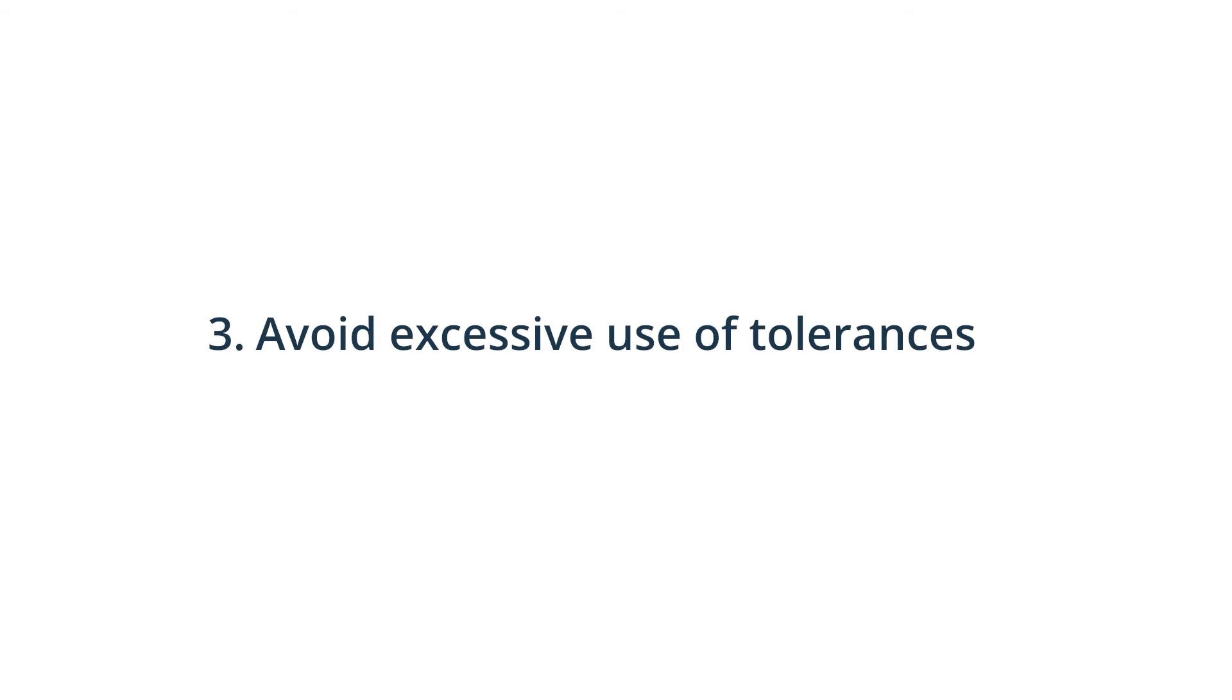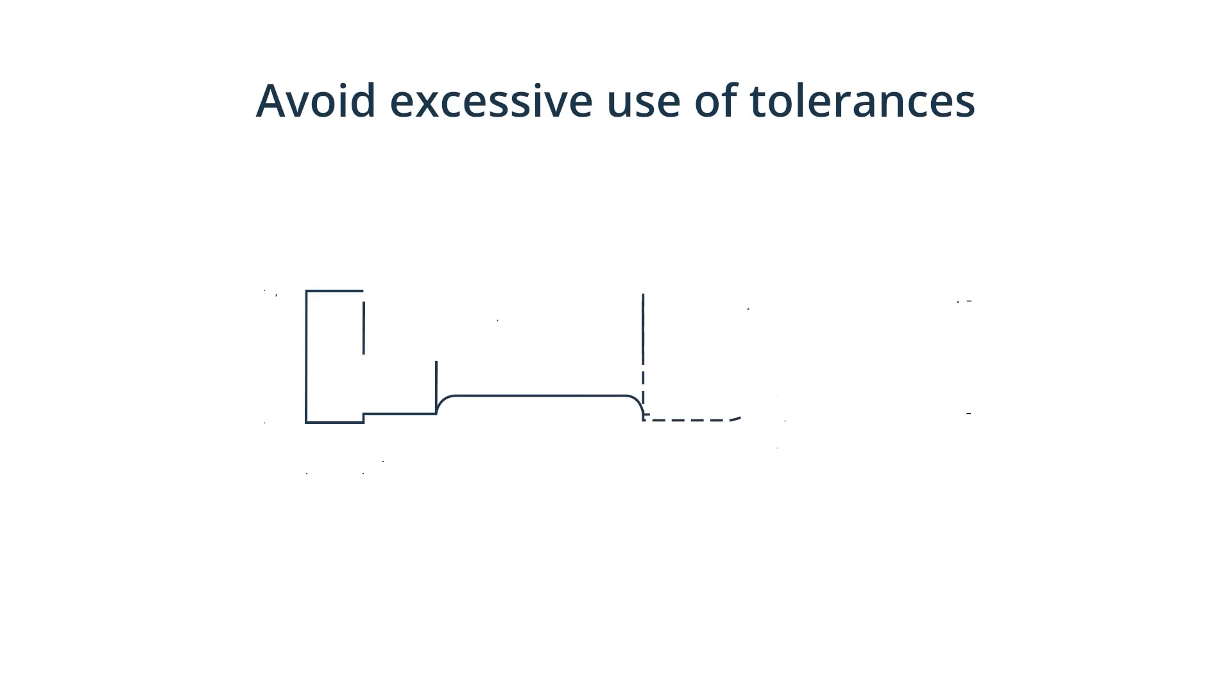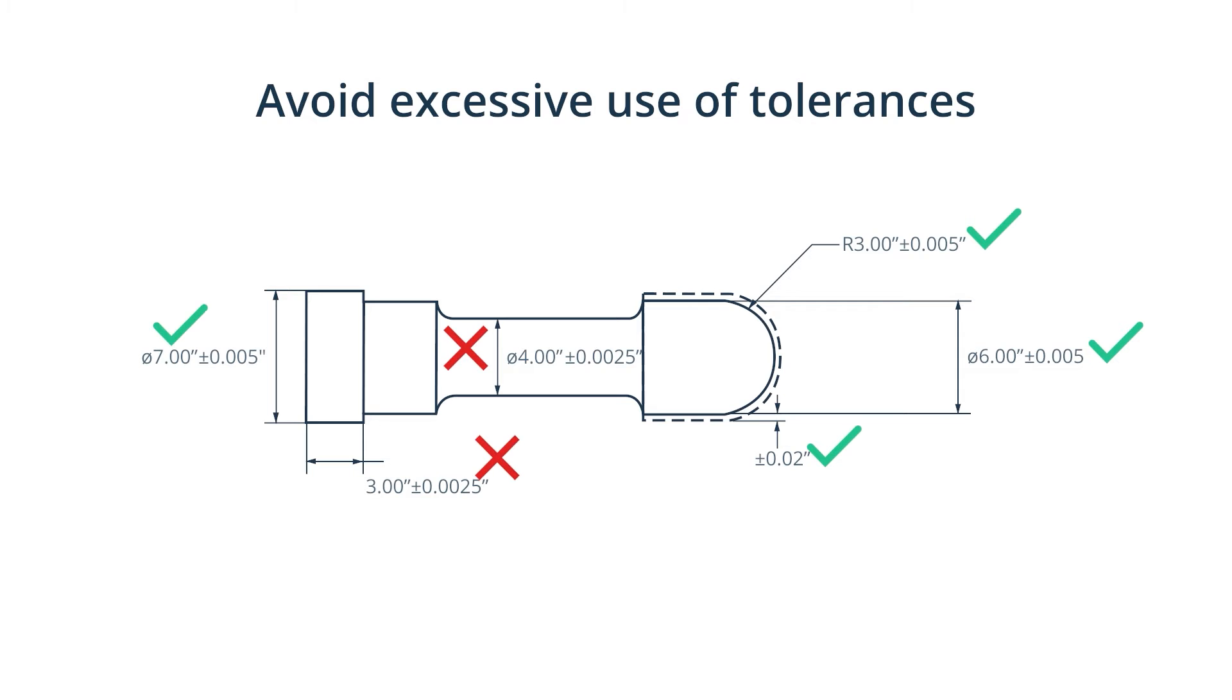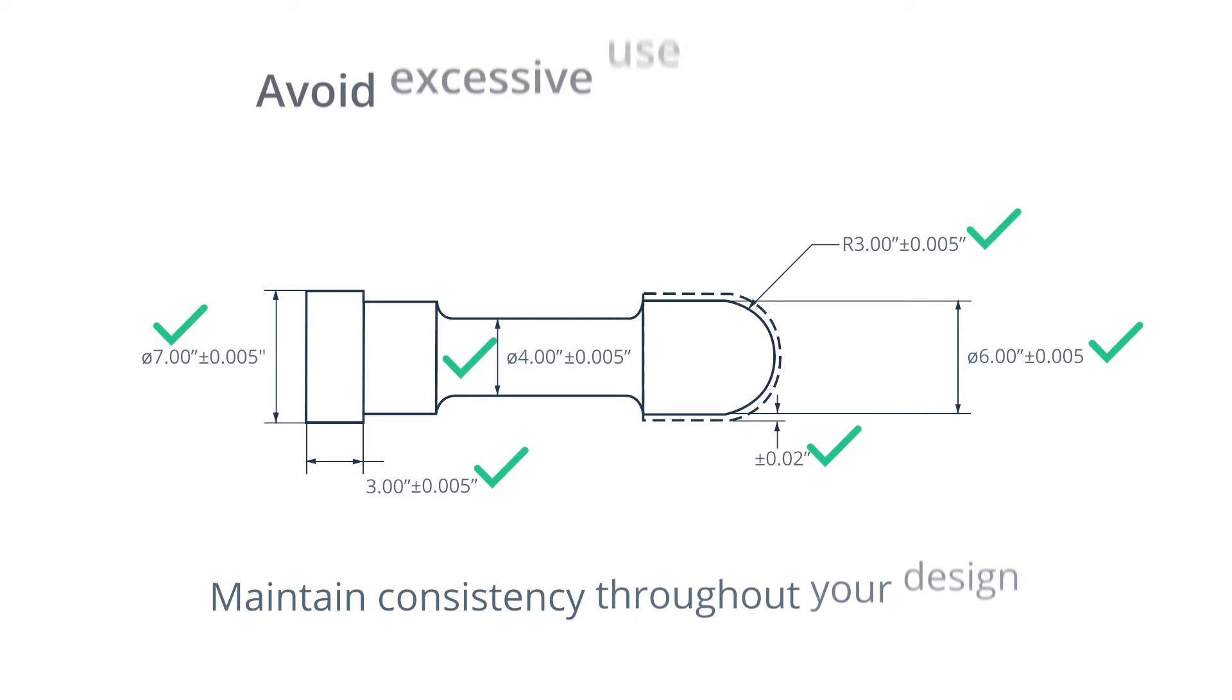3. Avoid excessive use of tolerances. If you don't specify tolerances in your design, the machine would simply use its standard tolerance. This helps save time and money. You should only specify tight tolerances when absolutely necessary. If you do specify tight tolerances, you should maintain consistency throughout your design. This helps reduce machining time.